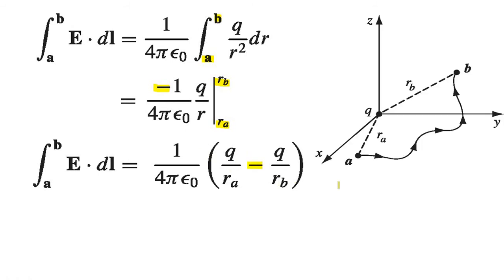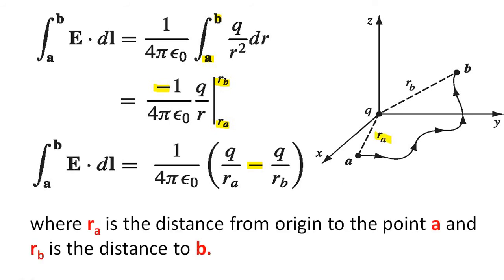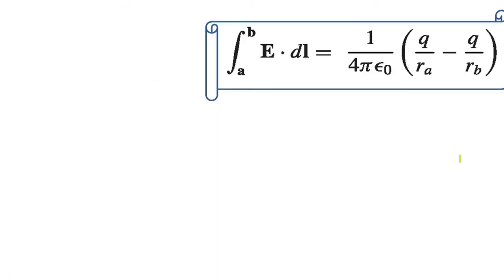Now we know what is Ra, we know what is Rb. Ra is the distance from origin to the point A and Rb is the distance from origin to the point B. So integral A to B E dot dL equal to 1 by 4π epsilon 0 Q by Ra minus Q by Rb.